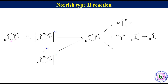The third possibility is that the alkyl radical at the gamma carbon can abstract hydrogen from the hydroxy group to produce the starting ketone. So if the gamma carbon of the starting ketone is chiral, there will be racemization at that center by this process.